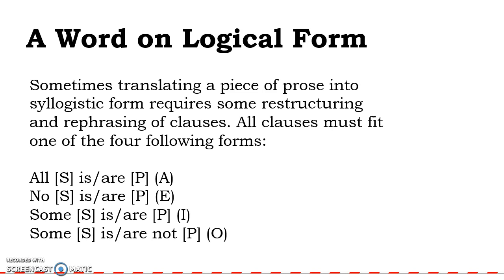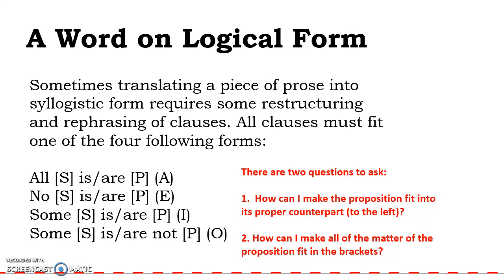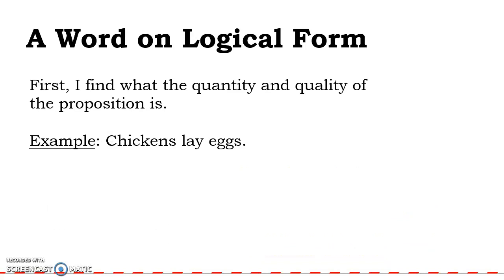All clauses, if we're talking about simple propositions, must fit into one of the four following forms: All S is P — that's the A form — No S is P (E), Some S is P (I), and Some S is not P (O). There are two questions to ask, thinking about form and matter: How can I make my proposition fit into its proper counterpart, one of these four forms? And how can I make all of the matter fit in the brackets — the S and P brackets — so I have nice, tidy S and P terms?